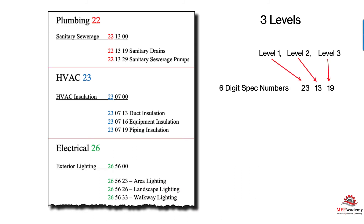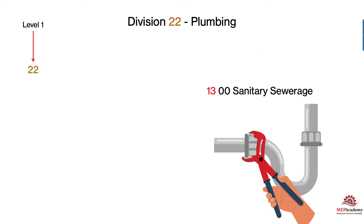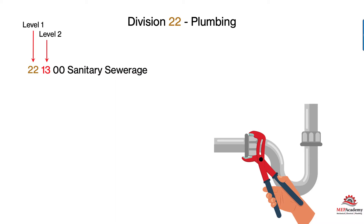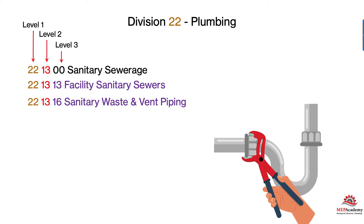The spec number is broken up into three levels of six digits — each level has two digits. We already learned the first set of digits is the Division. The second set defines a subcategory. So Division 22, which is Plumbing, is Level 1. The next level indicates, in this case, Sanitary Sewage. But we know there's more to Sanitary Sewage than just that, so that's where Level 3 comes in — the third set of numbers defines it further. In this case: Facility Sanitary Sewers, Sanitary Waste and Vent — they all fall under the main category of Sanitary Sewage.